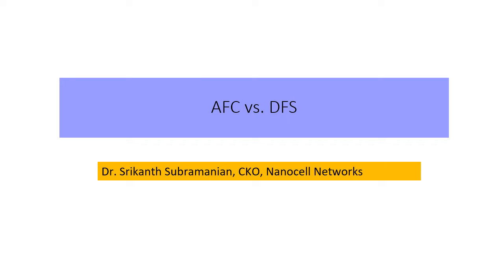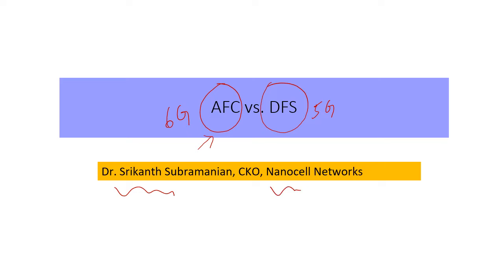Hi. In this short presentation, I wanted to highlight some differences between upcoming AFC practices in 6 gigahertz versus some of the DFS-related things which have been around with us in the 5 gigahertz spectrum. I decided to do this as I get a lot of questions comparing these two — are they the same, are they similar, what are the differences — and I thought it might be useful to just take a look at some of the nuances here. My name is Srikant and I am with NanoCell Networks.